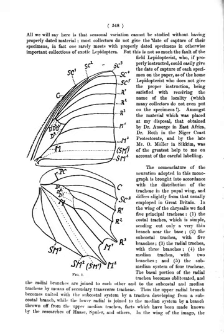Androconium (plural: androconia): specialized microscopic scales on the wings of male butterflies, believed to be scent scales for attracting the female. Annulate: formed in ring-like segments or with ring-like markings.